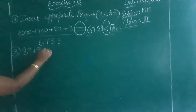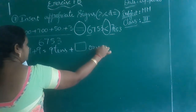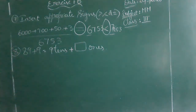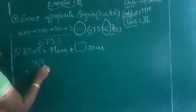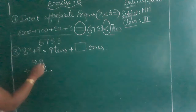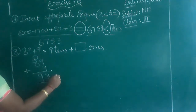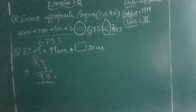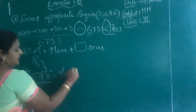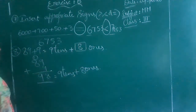Next: 89 plus 9 equals 9 tens plus how many ones? If you add 89 and 9, you get 98. That answer 98 contains how many tens and ones? 9 tens plus 8 ones. So the answer is 8 ones.